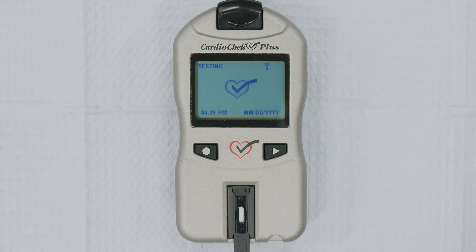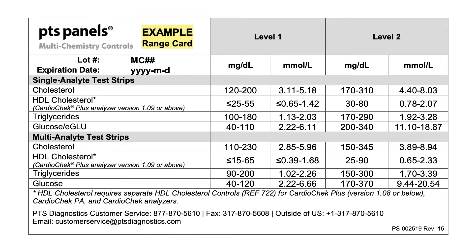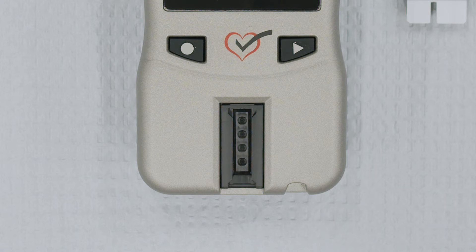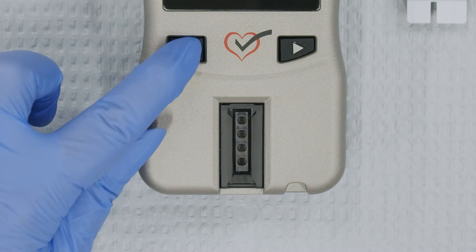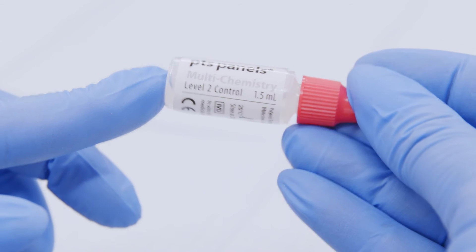The analyzer will automatically begin testing and will return results in as little as 90 seconds — do not move the analyzer while it is testing. Once the results appear, check your range card to see if your results are within the specified range. Look under the header Multi-Analyte Test Strips on the card for cholesterol, HDL cholesterol, and triglycerides ranges. Record your results and remove the test strip. If your level one results are within range, press Enter to move on to the level two control test using a new test strip and the level two vial of control solution.